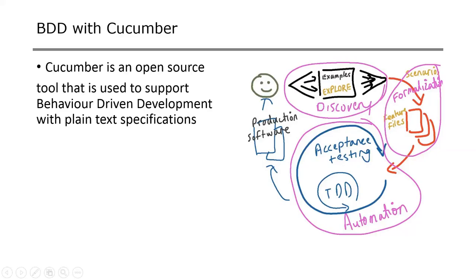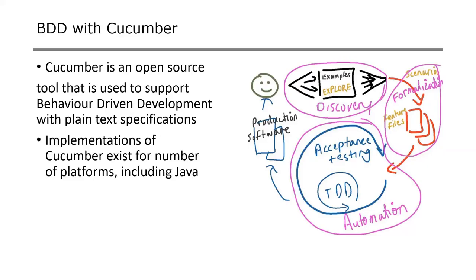Cucumber is an open source tool. It's very simple — it comes with plain text specifications. Implementations exist for several languages; it started primarily with Ruby, but now we have it for Java. I have experienced Cucumber through Ruby, and several other languages are also supported.